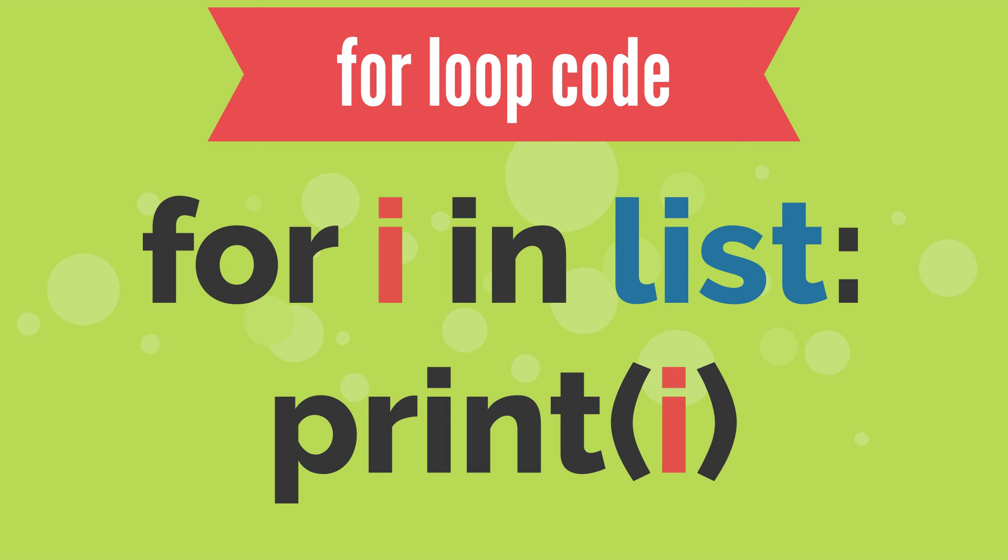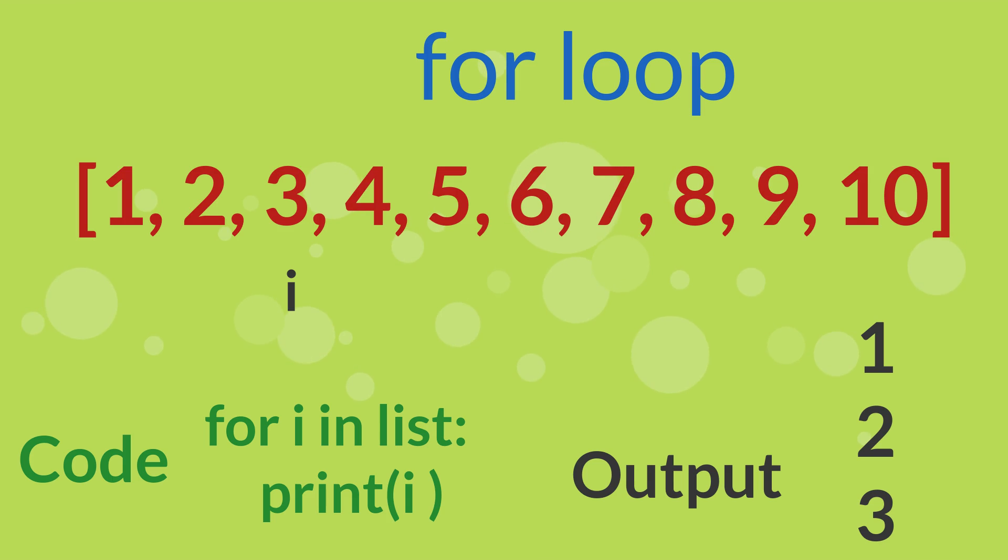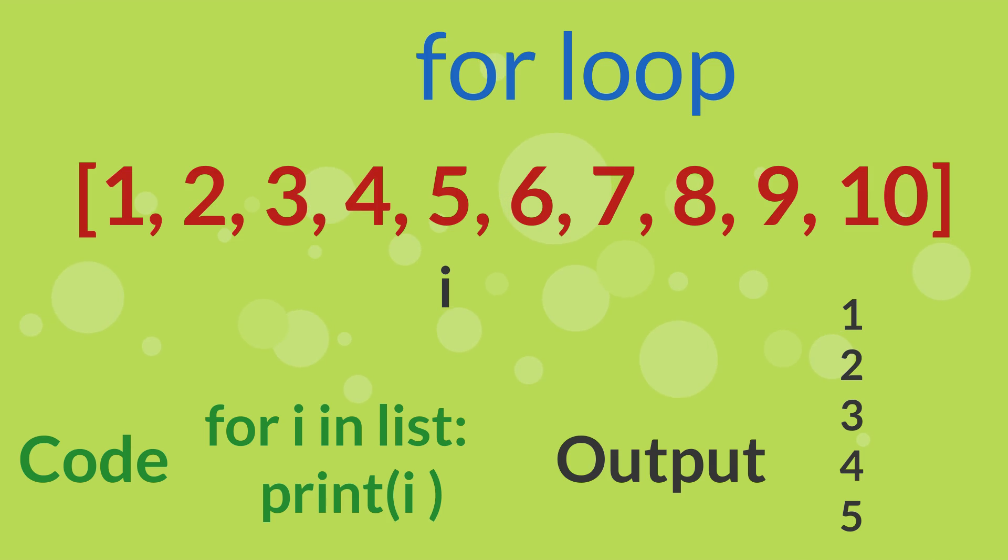When we run the code, when i reaches 1 in the list, 1 will be printed. When variable i reaches 2, 2 will be printed. This continues through the list until variable i reaches 10, which will be printed as the end of the list.